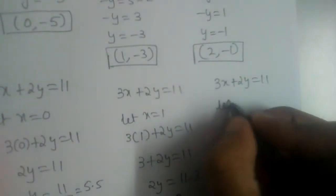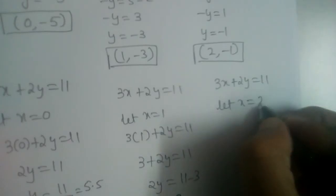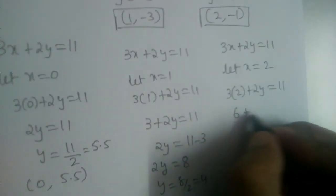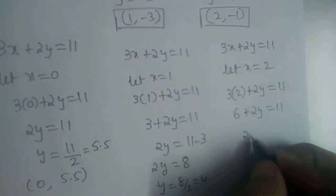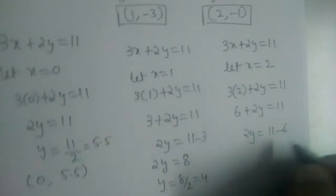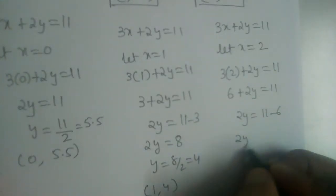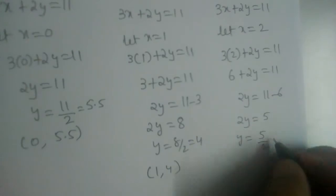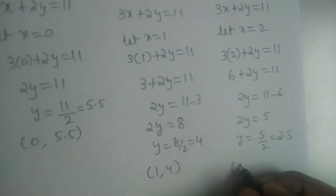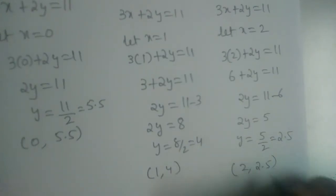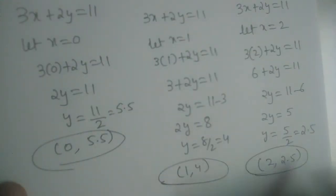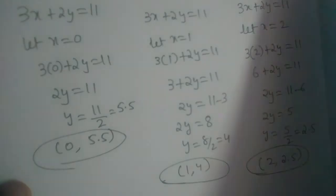Now let us find the third point by substituting x is equal to 2. So 3 into 2 plus 2y is equal to 11, giving 6 plus 2y is equal to 11. Therefore 2y is equal to 5 and y is equal to 5 divided by 2, which is 2.5. The third point is 2 comma 2.5.